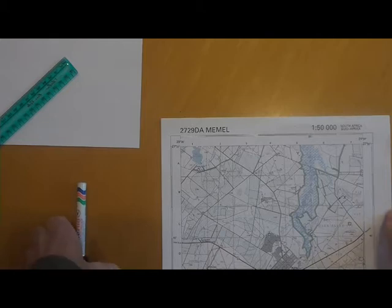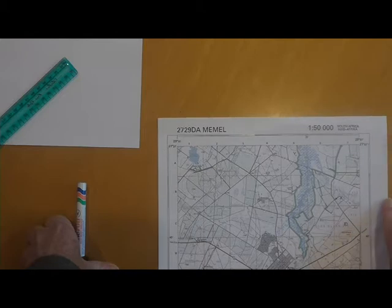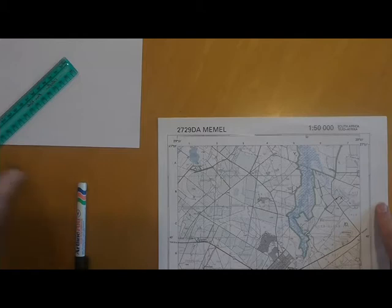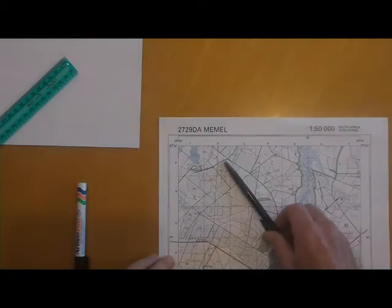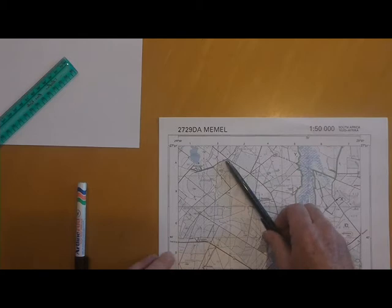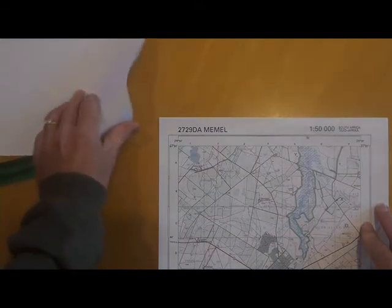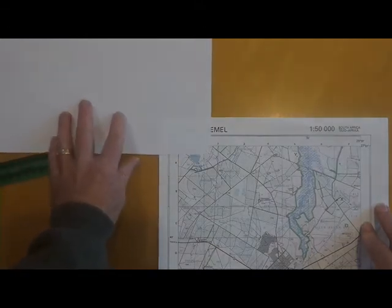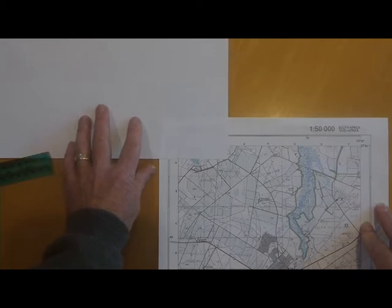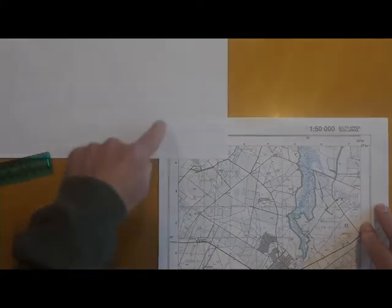Okay, so what we're doing today is having a look at how to locate precise positions on the 1 in 50,000 map. So let's start with this intersection over here, that we can now look at the latitude and longitude of. And the easiest way to get it accurately is to use a piece of paper and just put the corner on that point, like that. And make sure that it's square with the other edges.